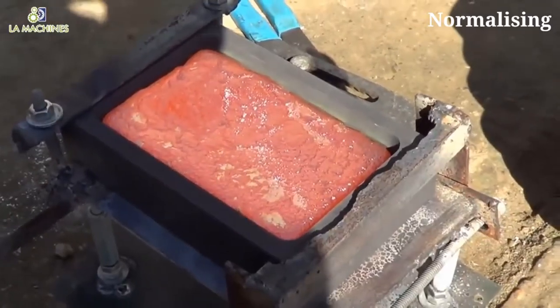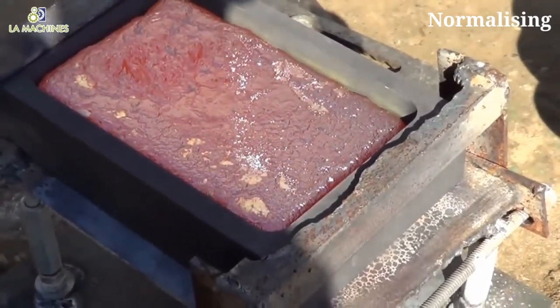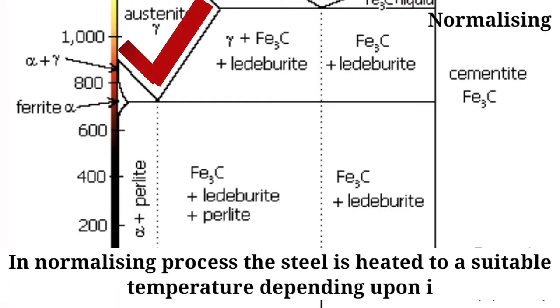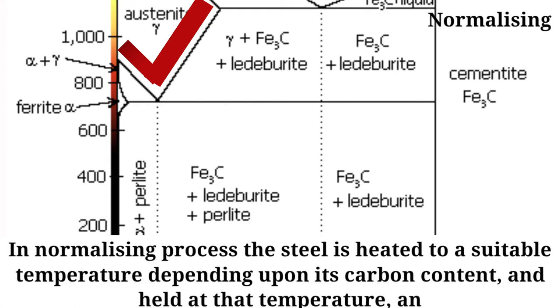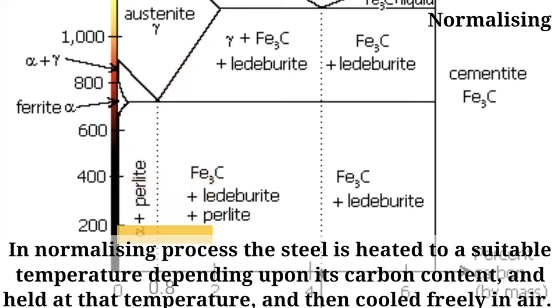In the normalizing process, the steel is heated to a suitable temperature depending upon its carbon content, held at that temperature, and then cooled freely in the air.